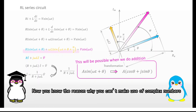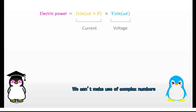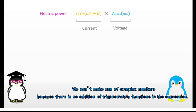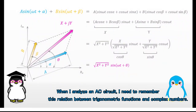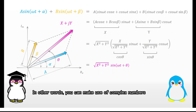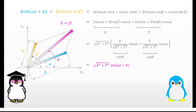Now you know the reason why you cannot make use of complex numbers when you calculate electric power, right? Yes. We cannot make use of complex numbers because there is no addition of trigonometric functions in the expression. When I analyze an AC circuit, I need to remember this relation between trigonometric functions and complex numbers. In other words, you can make use of complex numbers when you do linear calculations on trigonometric functions. I understand. Thank you.